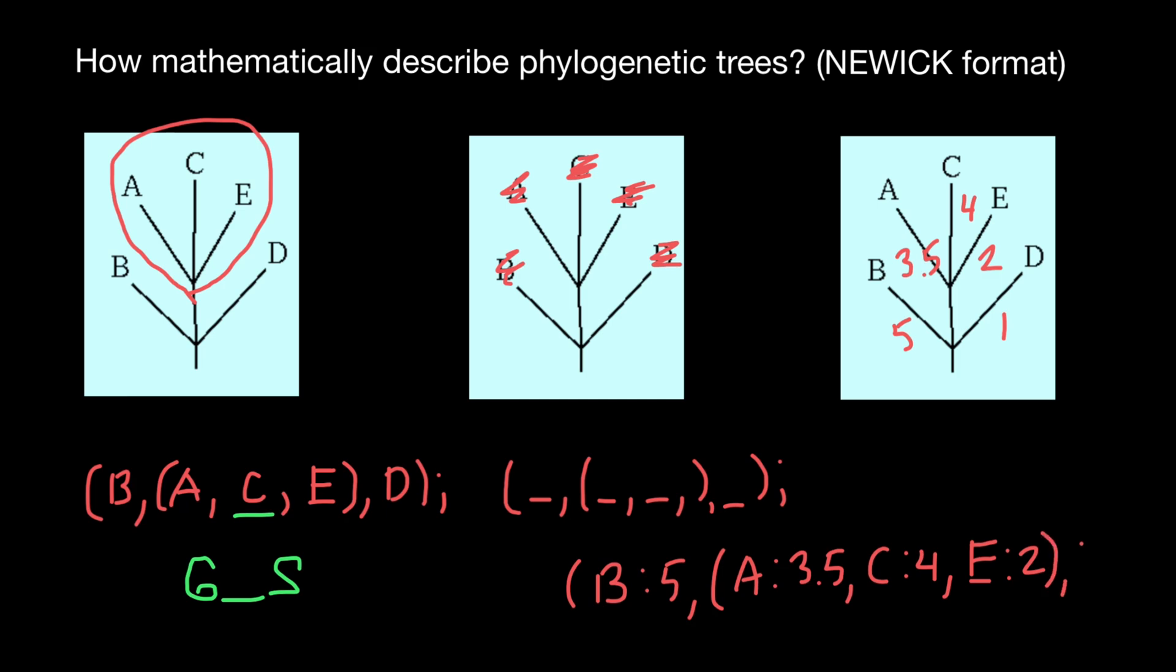Then go comma, D, colon, 1, and we close parentheses, and add semicolon. This is going to be a description of the phylogenetic tree with branches of different sizes.